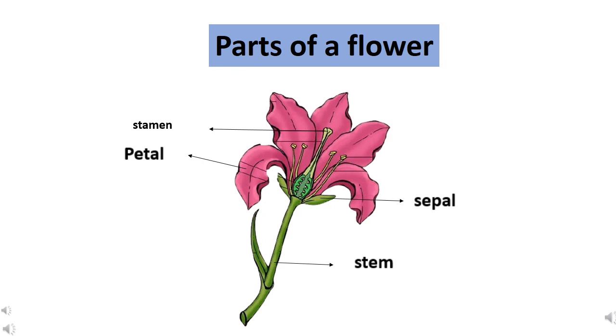This layer lies just above the sepal. You can see in the picture, it starts from the sepal, right? They are often bright in colors like red, yellow, pink, blue, etc. And they attract butterflies and insects.